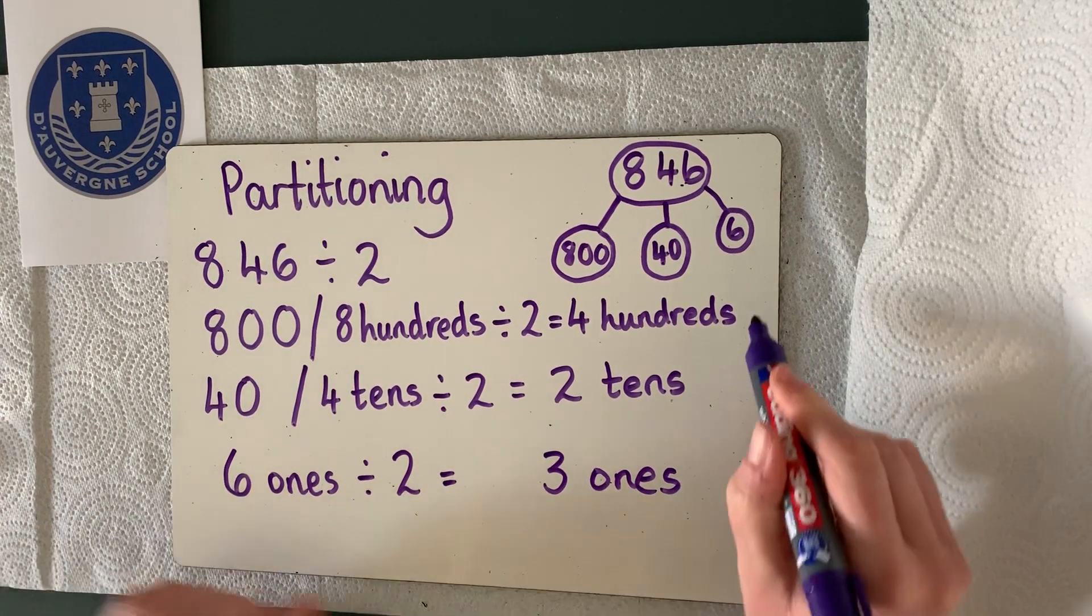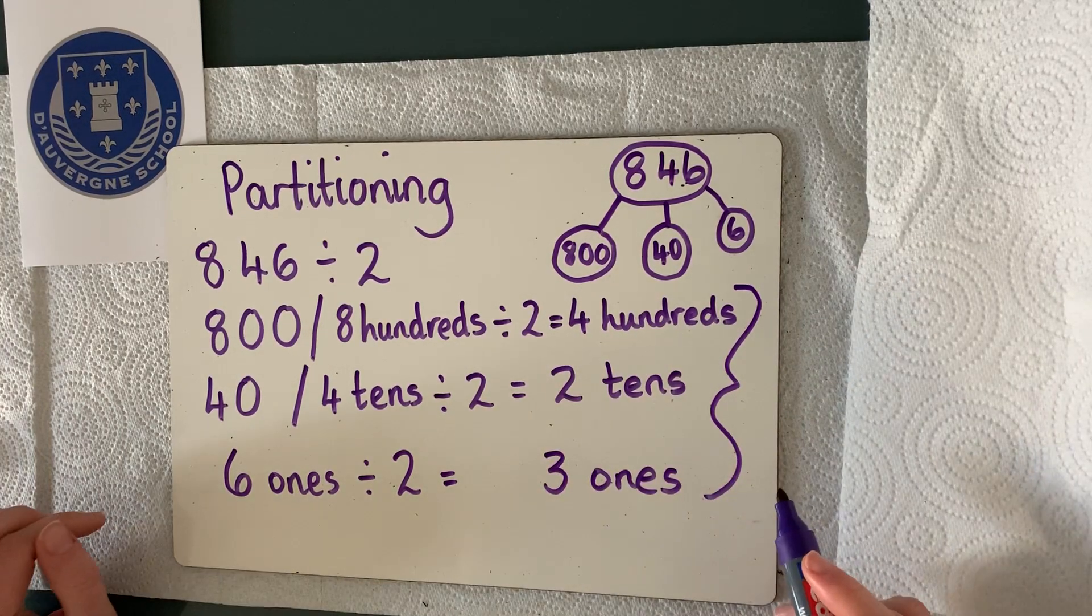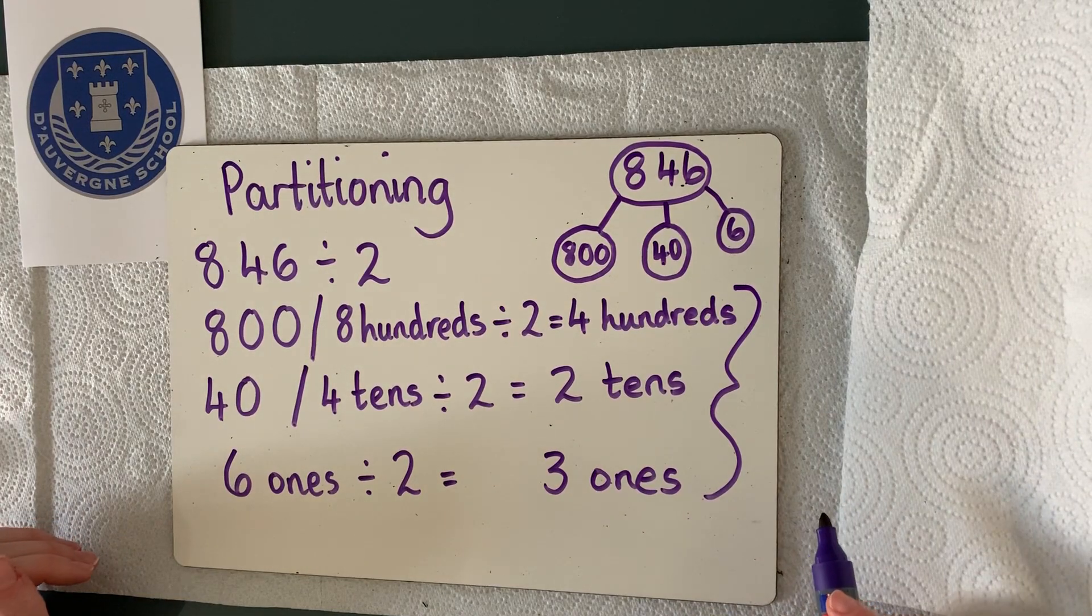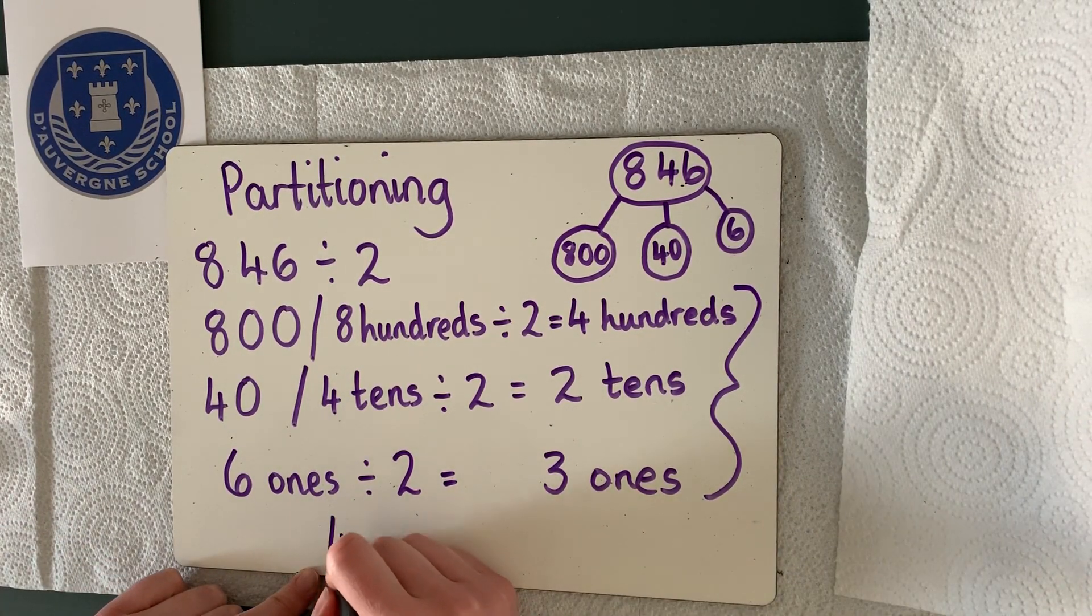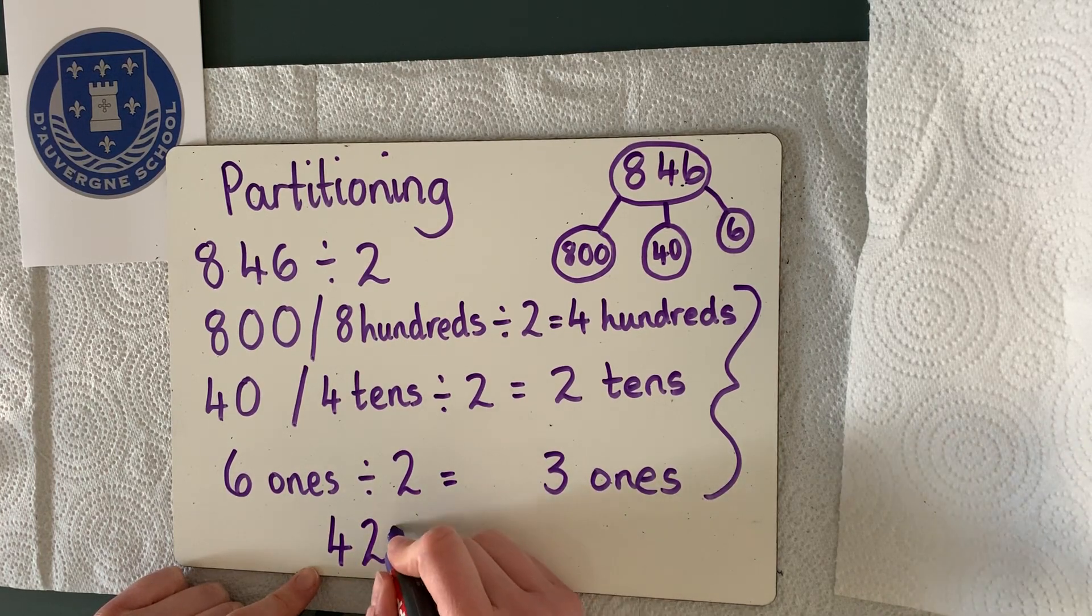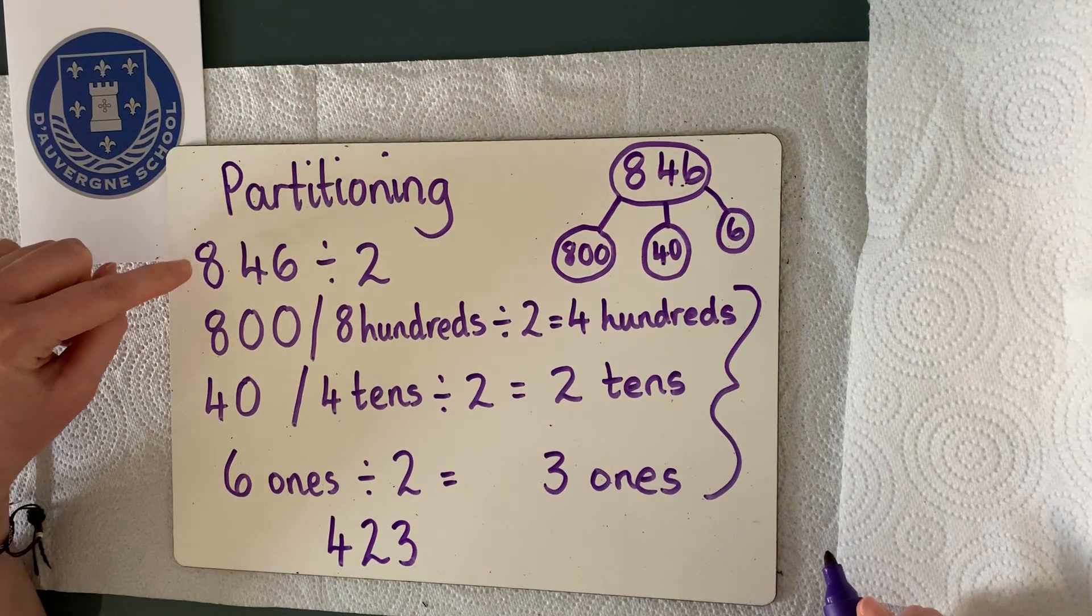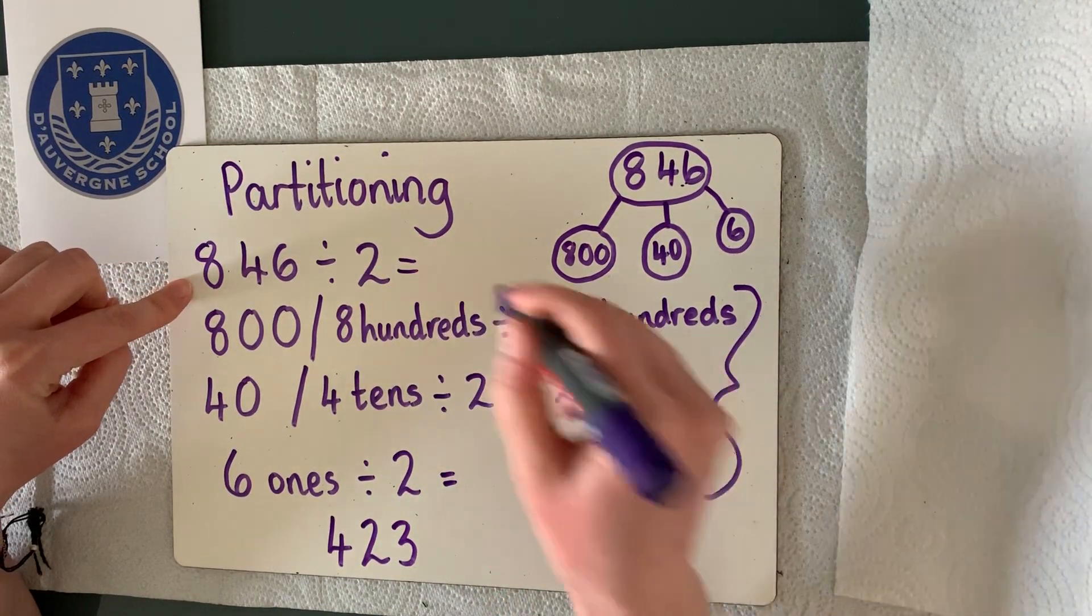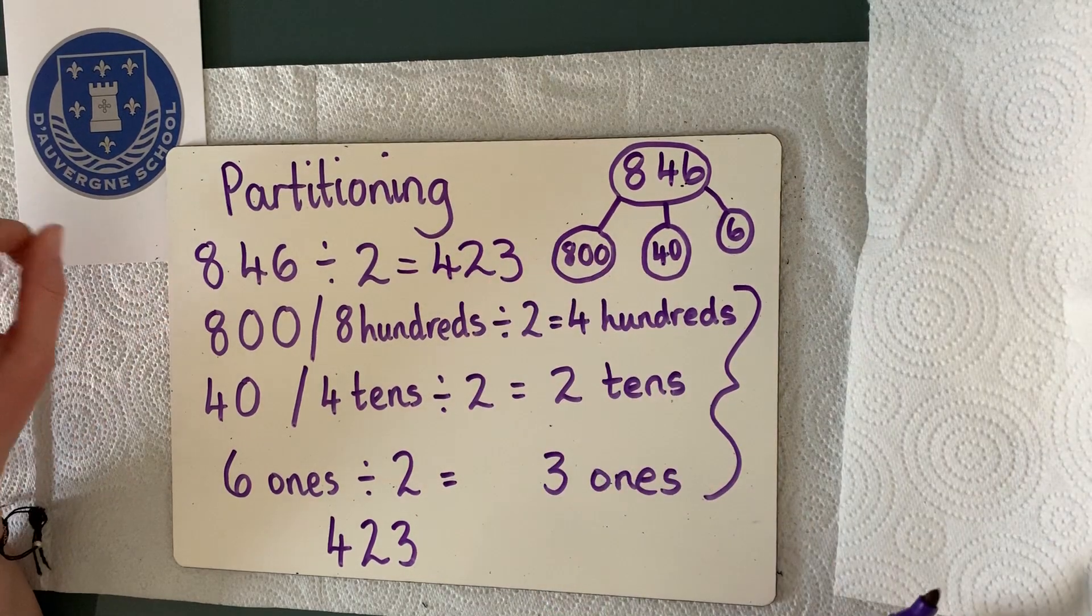So now what we have to do is we have to bring our answers together to make one full number that has our three digits in the correct place value. So 4 hundred, 2 tens, and 3 ones. So 846 divided by 2 equals 423.